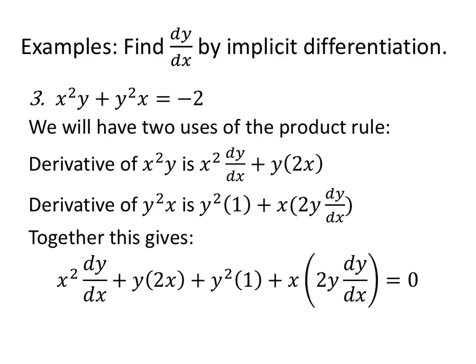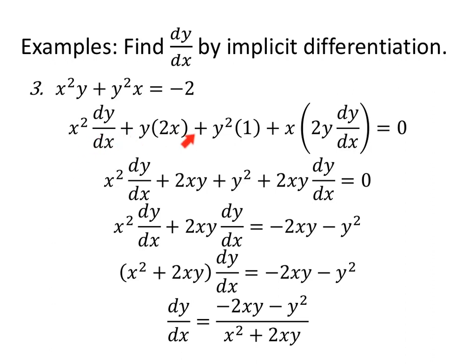We still need to solve for dy/dx. Cleaning things up: x squared dy/dx plus 2xy plus y squared plus 2xy dy/dx equals 0. Collect the dy/dx terms on the left — anything without dy/dx, meaning 2xy and y squared, moves to the right: minus 2xy minus y squared. Factor out dy/dx from x squared plus 2xy, then divide. dy/dx equals negative 2xy minus y squared, all over x squared plus 2xy.